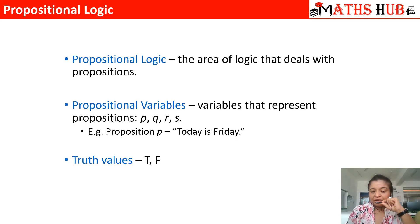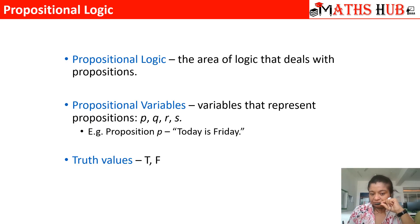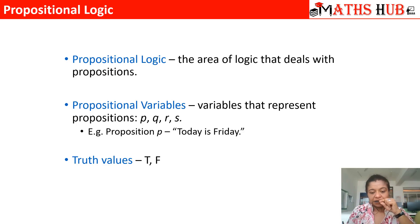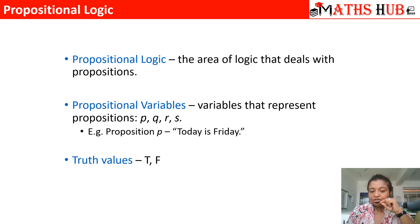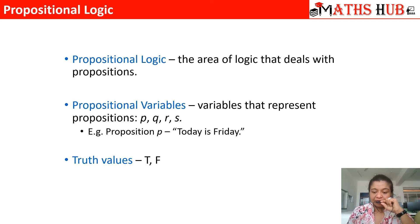For example, the statement 'Today is Friday' can be represented with a symbol. Since we are doing the logics behind these propositions, and as we said a statement is either true or it is false — what are the truth values of a statement? The truth values are that either the statement is true or the statement is false; there is no other outcome. So either it is T or it is F.